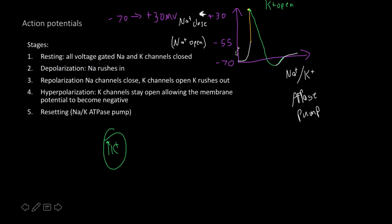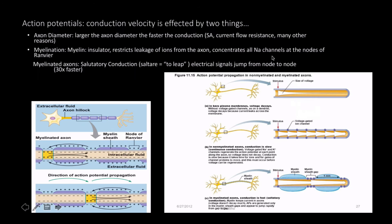To review: stimuli bring us from negative 70 to negative 55. All sodium channels open, causing massive depolarization up to positive 30. Then potassium rushes out, causing hyperpolarization. The depolarization results from sodium rushing in; the hyperpolarization results from potassium rushing out.